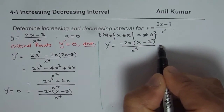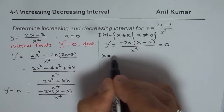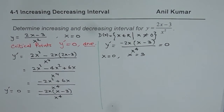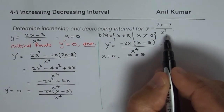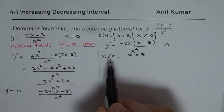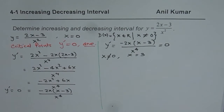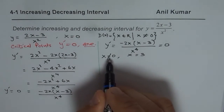To find critical numbers, we equate the derivative to 0. The numerator is zero at x equals 0 and x equals 3. Now x equals 0 is not in the domain, but it is still a critical point because the derivative does not exist there — it is a vertical asymptote. We should not neglect this point.